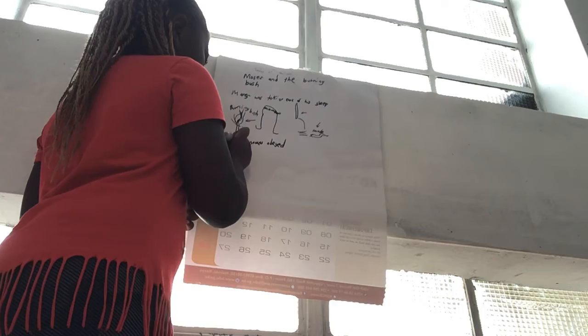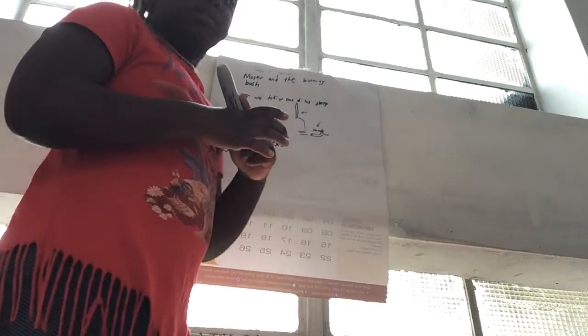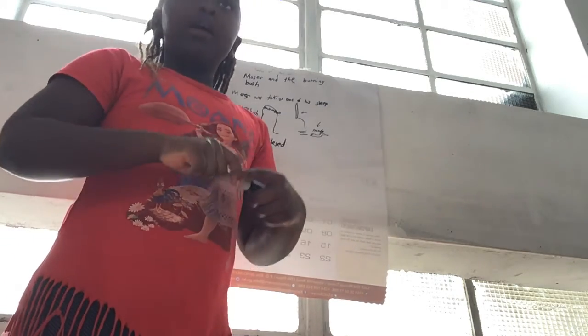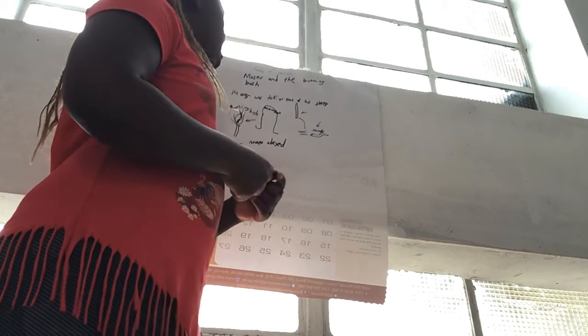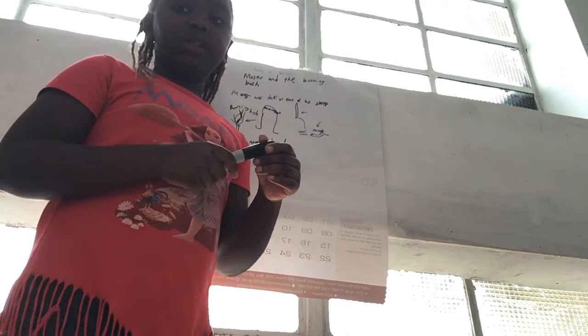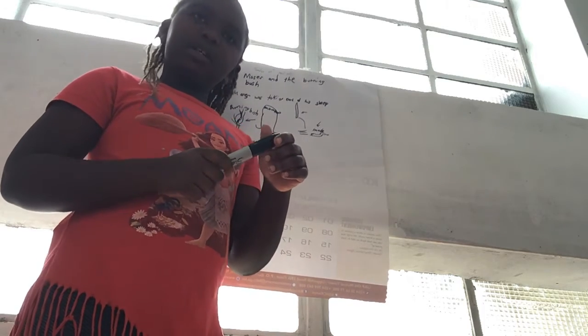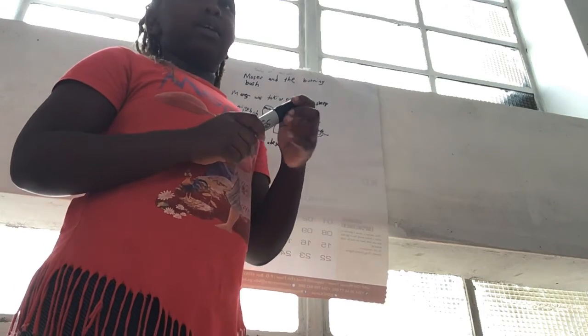But when he was told to put it back, the disease went off. Then he was told, go and set the children of Israel free. It comes from the book of Exodus. You guys go and find it.